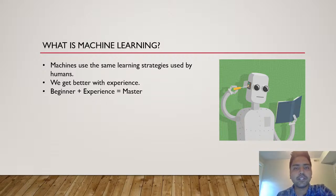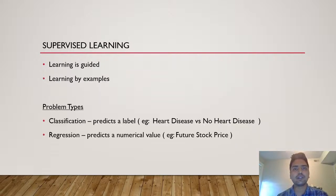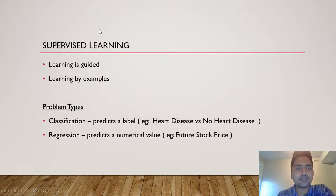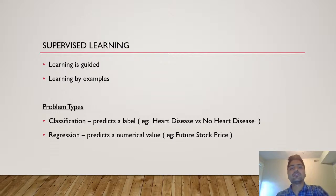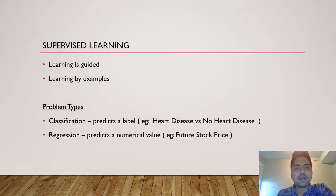Let us explore the types of machine learning. The first type is supervised learning, and it is one of the most popular types because it is most implemented. In supervised learning, the learning is guided — from the name itself we can understand it is supervised. We have a teacher who says whether you are performing well or need to improve. The learning is directed by examples: the teacher gives you a set of previous examples and the result. This is formally called training data in machine learning, and the machine uses this training data to learn how to do the task. Supervised learning is further subdivided into classification and regression.